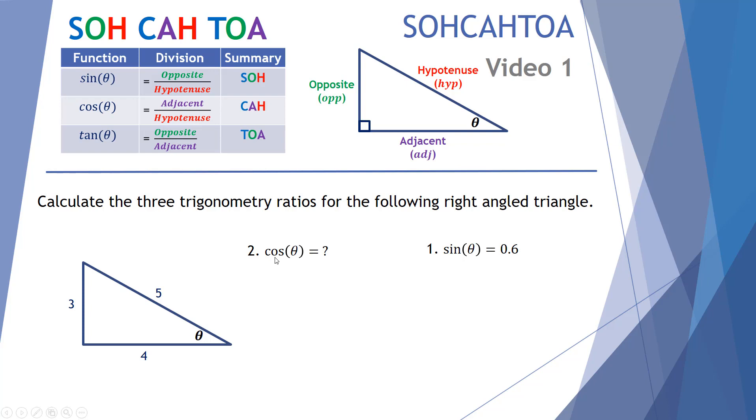Next we look at the cos of this angle theta. So cos is equal to adjacent over hypotenuse, or from the SOHCAHTOA it's the CAH. Cos is adjacent over hypotenuse. So the adjacent measurement here is four and the hypotenuse is five. We sub those values in, four over five. Cos of the angle theta comes out to 0.8.